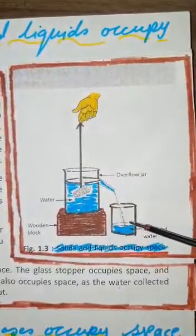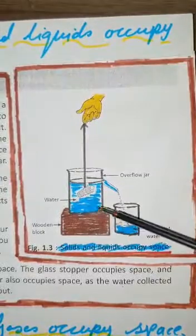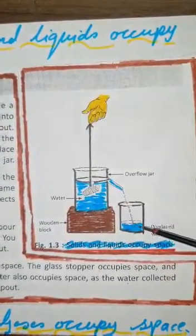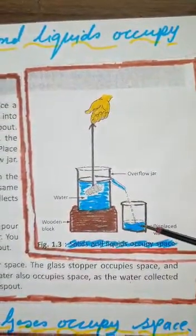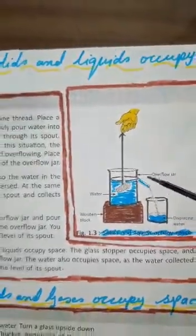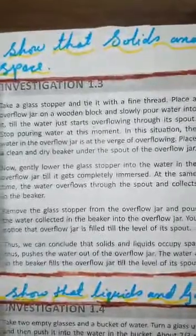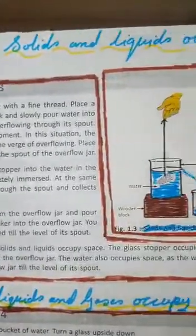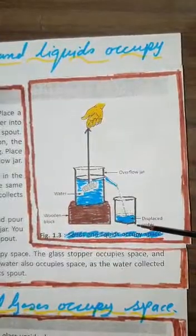Thus we conclude that solids and liquids occupy space. The water also occupies space, as the water collected in the beaker fills the overflow jar till the level of its spout. So this investigation shows that solids and liquids occupy space.